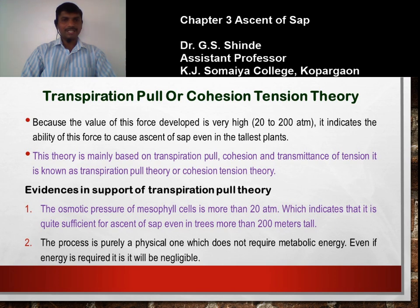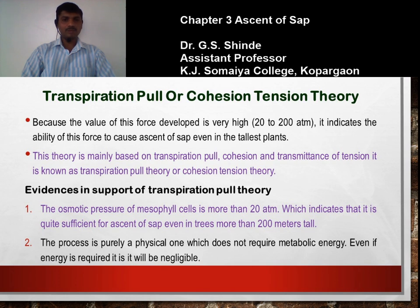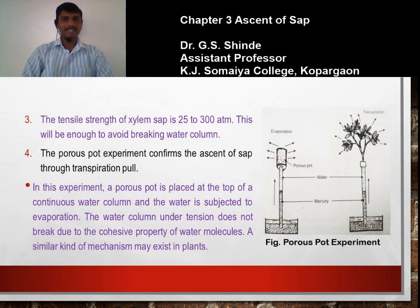Evidences in support of the transpiration pull theory: The osmotic pressure of mesophyll cells is more than 20 atmospheres, which is sufficient for ascent of sap even in trees more than 200 meters tall. The process is purely physical and does not require metabolic energy — and even if energy is required, it is negligible. The tensile strength of xylem sap is 25 to 300 atmospheres, which is enough to avoid breaking of the water column.